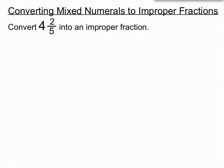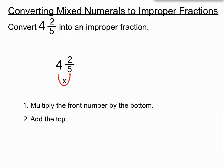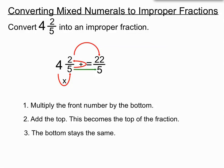So let's have a look at another example. 4 and 2 fifths into an improper fraction. Okay, front number times the bottom makes 20. Add the top. 20 plus 2 is 22. That creates the top number on the fraction, on the improper fraction, and the bottom stays the same. Okay, 4 times 5 was 20, plus 2 was 22. That goes up the top, and the bottom stays the same. It's nice when the bottom stays the same each time. It gives us one less thing to worry about.